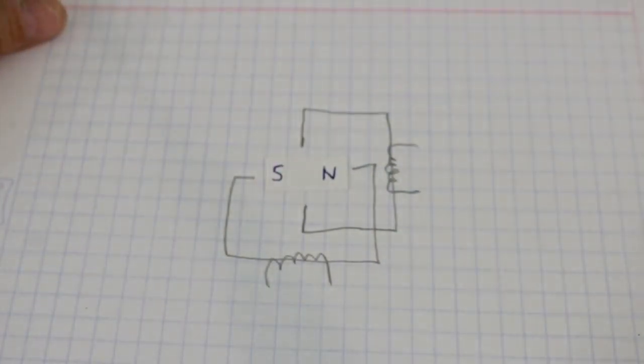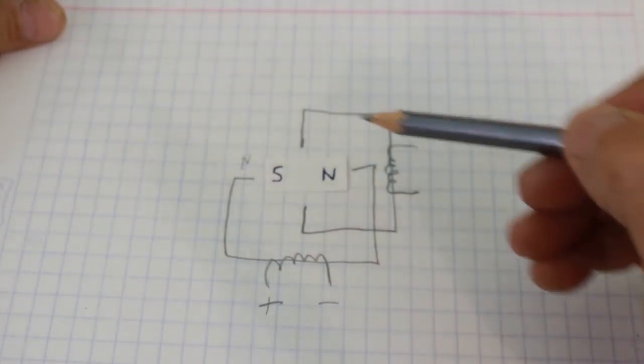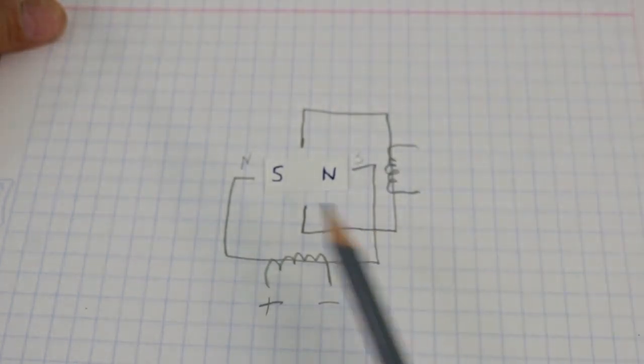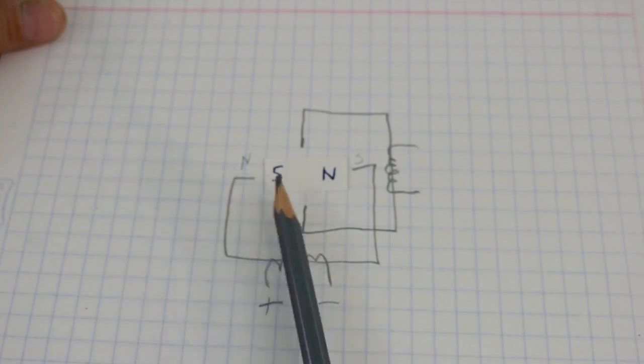Now, if we apply voltage to this coil, for example, positive and negative here, then the core will be magnetized and we will have a north-south here and a south here. So the magnet aligns in this direction. North attracts south, south attracts north.